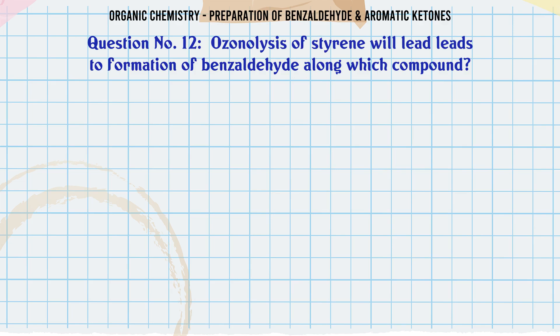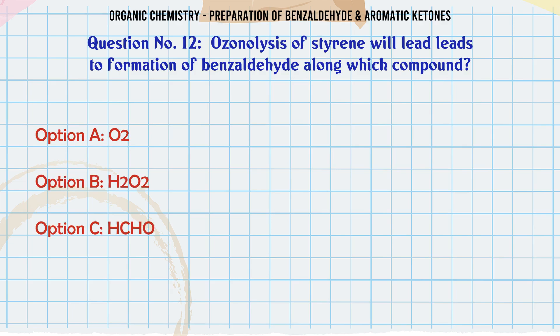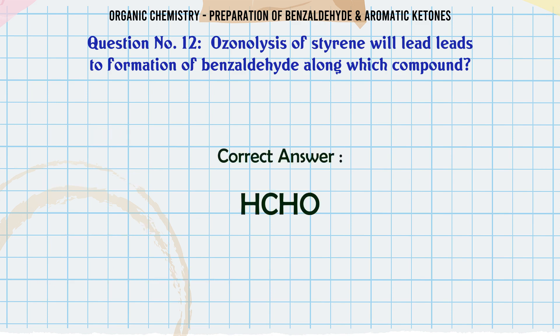Ozonolysis of styrene: Ozonolysis of styrene leads to formation of benzaldehyde along with which compound? A. O2. B. H2O2. C. HCHO. D. H2O2 and HCHO. The correct answer is HCHO.